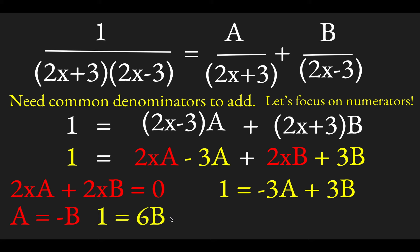Well, then that lets us know straight away what b is. b is going to then be 1 sixth, and a is going to be minus 1 sixth.